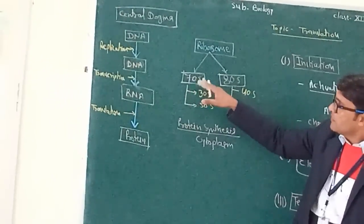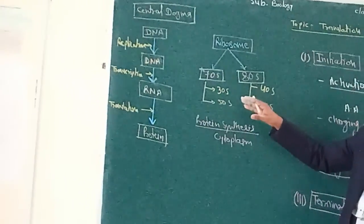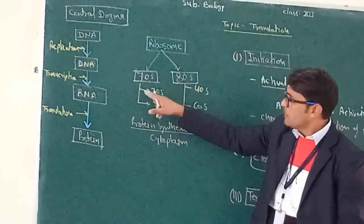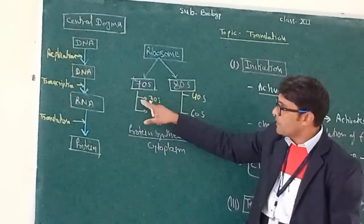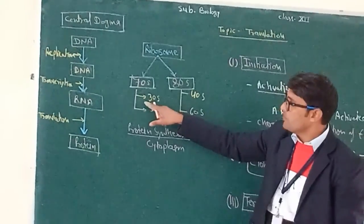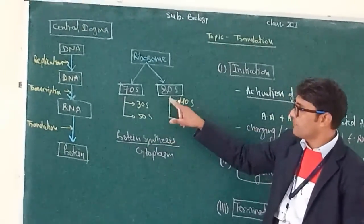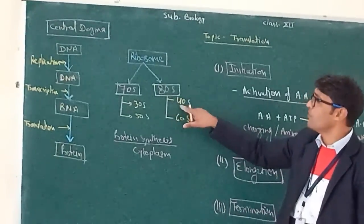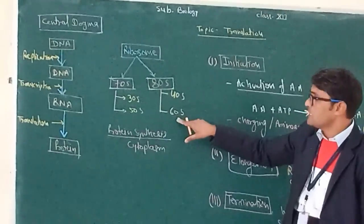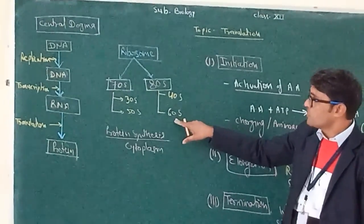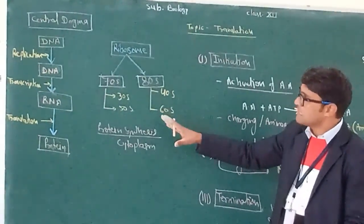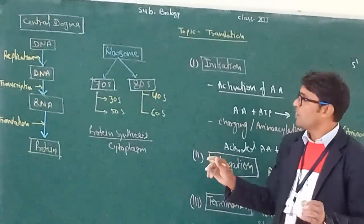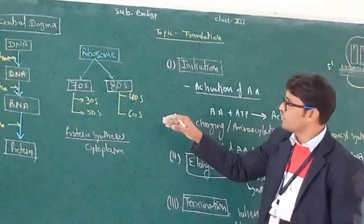Here we can see that ribosomes have two subunits: a larger subunit and a small subunit. In prokaryotes, the large subunit is 50S. In eukaryotes, a small subunit of 40S and a large subunit of 60S are present. So protein synthesis is catalyzed by ribosome, and ribosome is also known as the factory for protein synthesis.